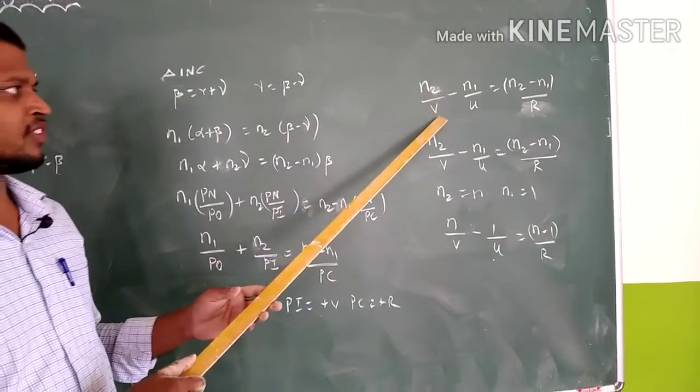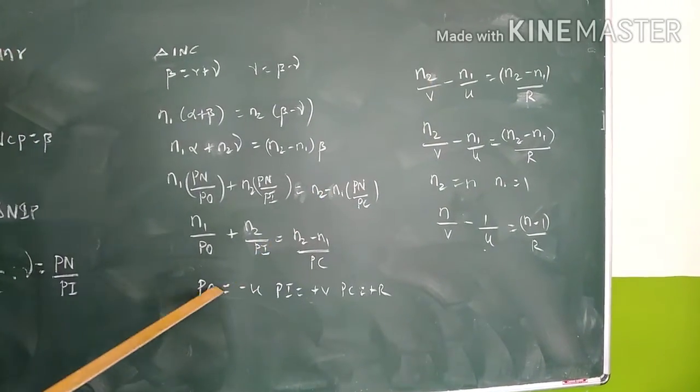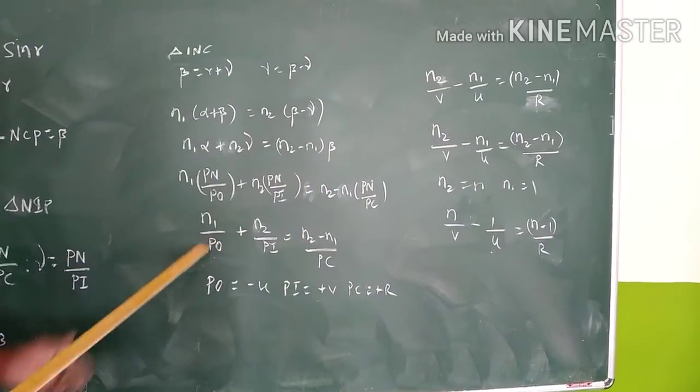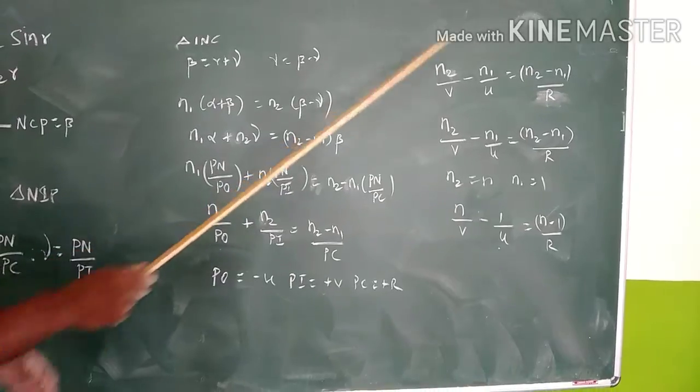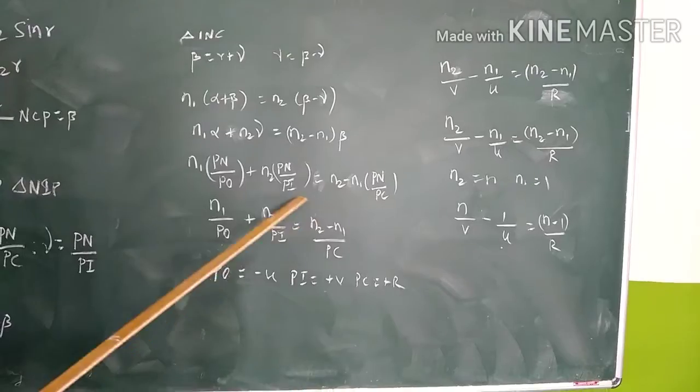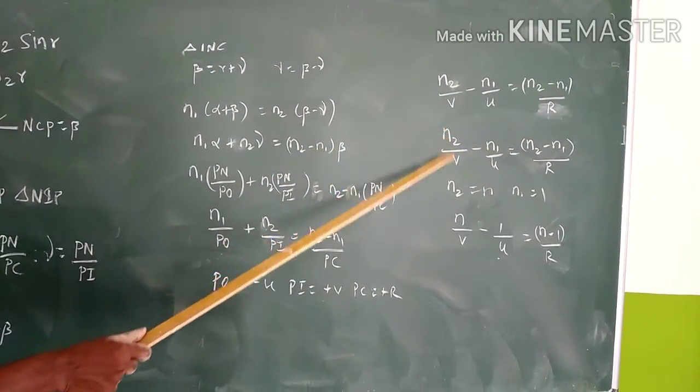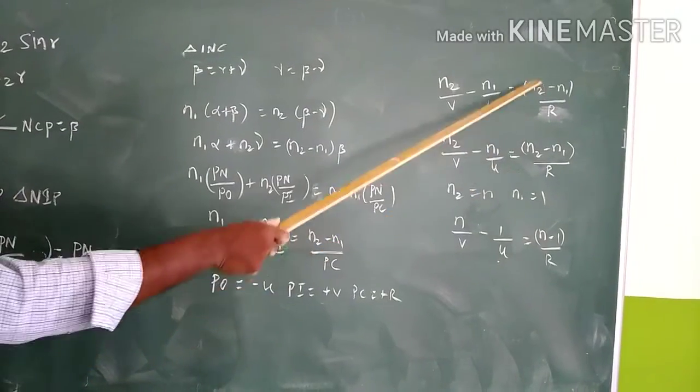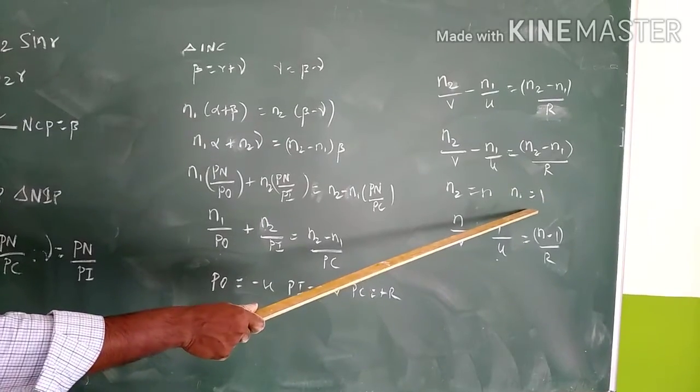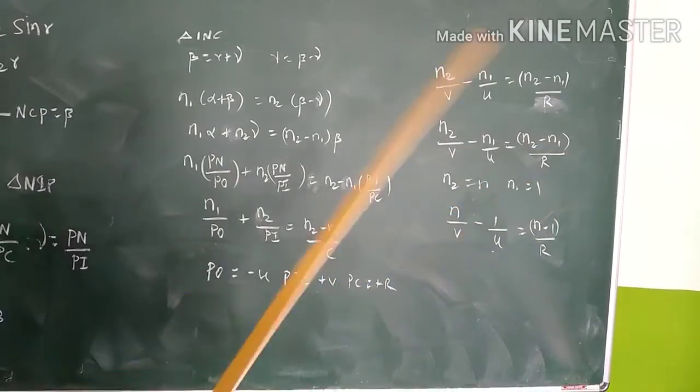Here we have n2 by v minus n1 by u. PO is u, PI is v, PC is r. So n2 by v minus n1 by u equals (n2 minus n1) by r. In this case, if n2 equals n and n1 equals 1, then n by v minus 1 by u equals (n minus 1) by r.